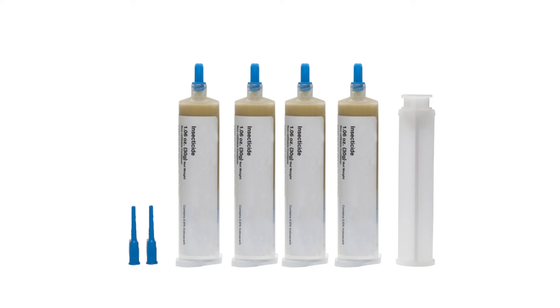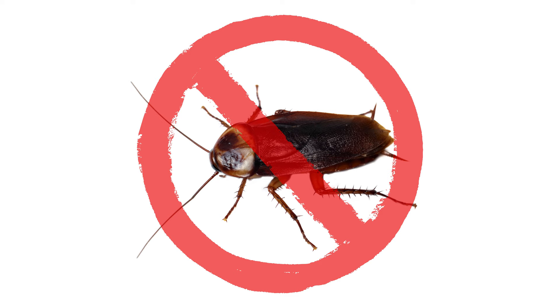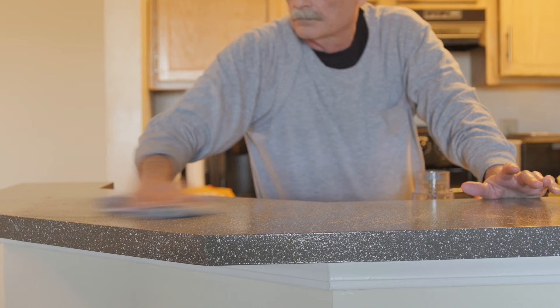Roach bait is one of the most effective ways to eliminate roaches and is an important part of any roach treatment plan. To successfully get rid of roaches, it's important to know where and how to apply roach bait in the home.